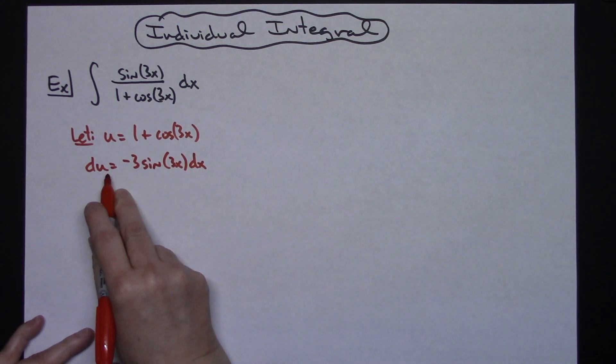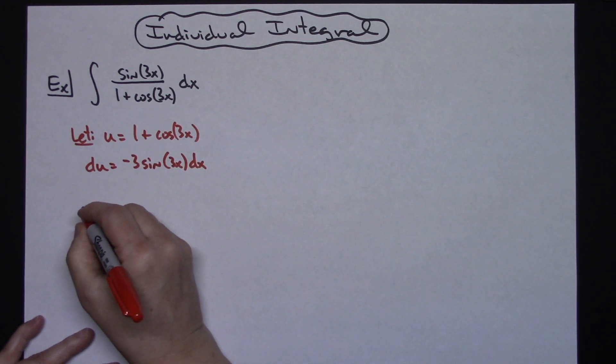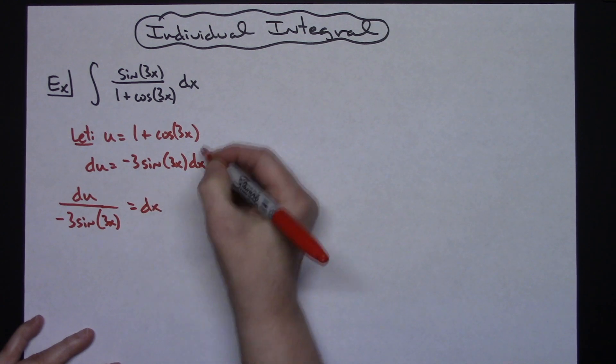And then I want to divide both sides by this entire expression so I can solve for dx. So I'll have du over negative 3 sine 3x and that's going to be equal to my dx.